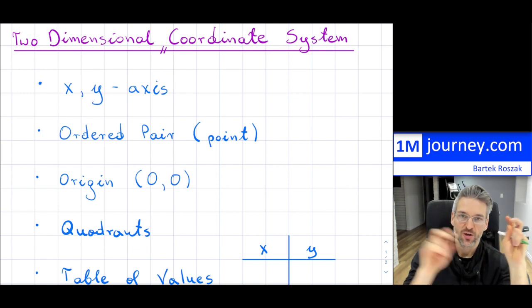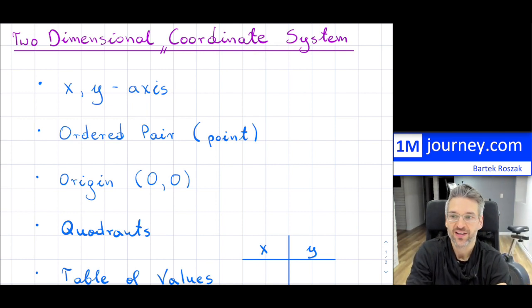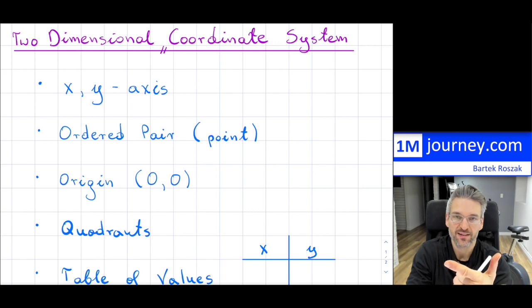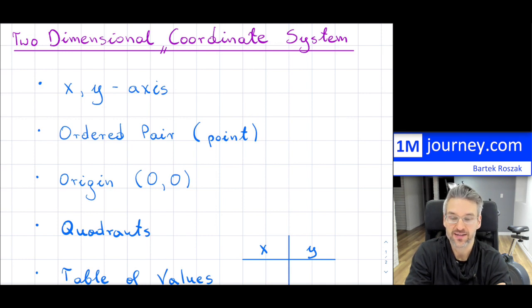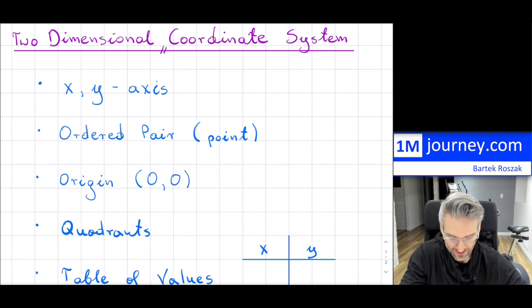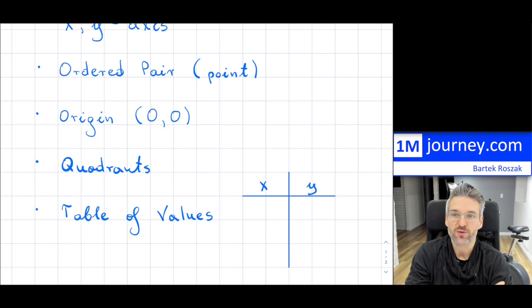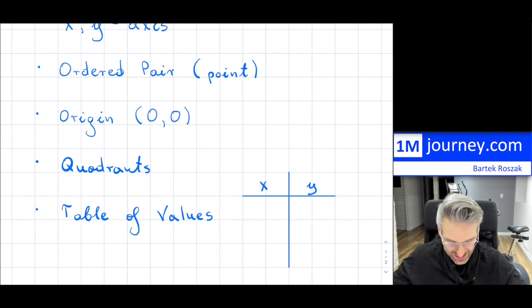I'm going to introduce the coordinate system, sometimes called the Cartesian plane. You can hear it called the x,y axes — coordinate system, Cartesian plane, x,y axes are the three most common terms used. I'll go over what an ordered pair is, how to plot x and y values, where to find the origin, the four quadrants and their counterclockwise direction, and how to create a table of values and plot points on a Cartesian plane.